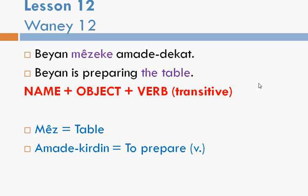Another example. Beyan — Beyan is a Kurdish female name. Beyan Mizaka amada dakat. Beyan is preparing the table. But look at the sentence structure. In Kurdish you say: Beyan, the table, prepares — or is preparing. So it is name, then object, and then the verb goes to the end. This verb 'preparing', or amada dakat, is a transitive verb.